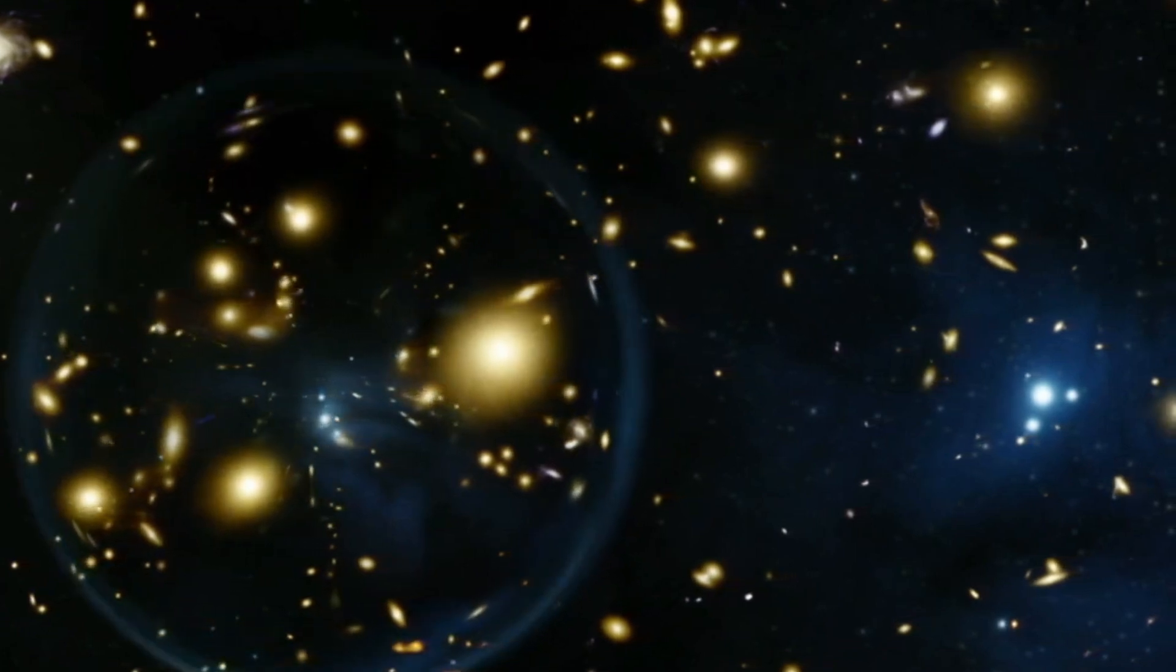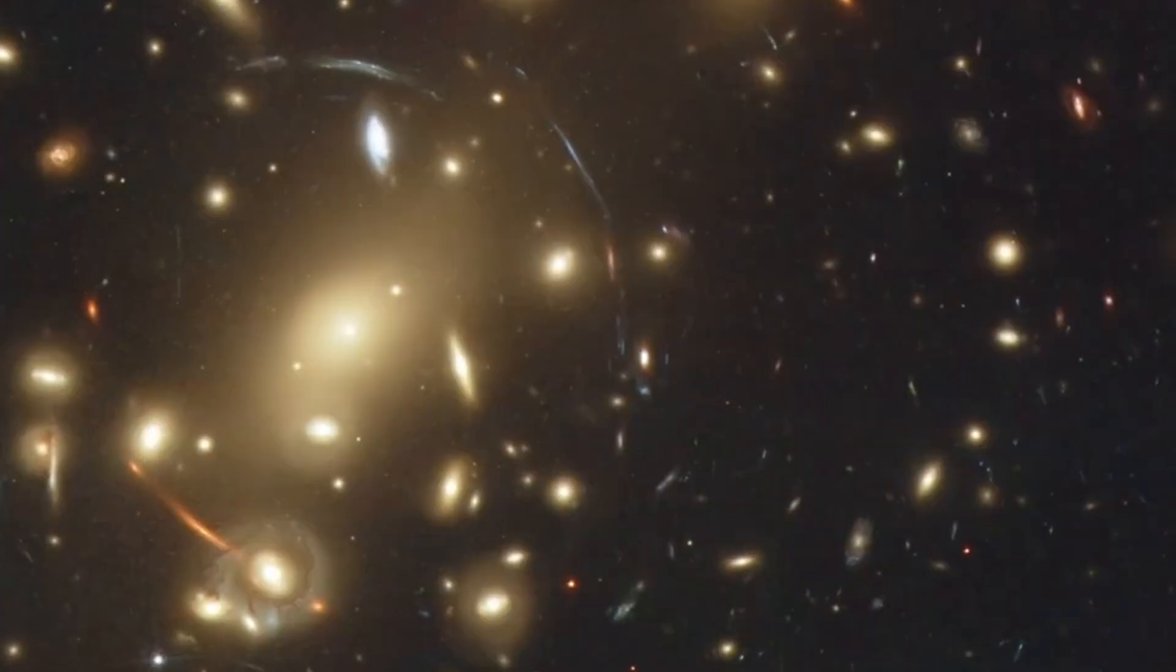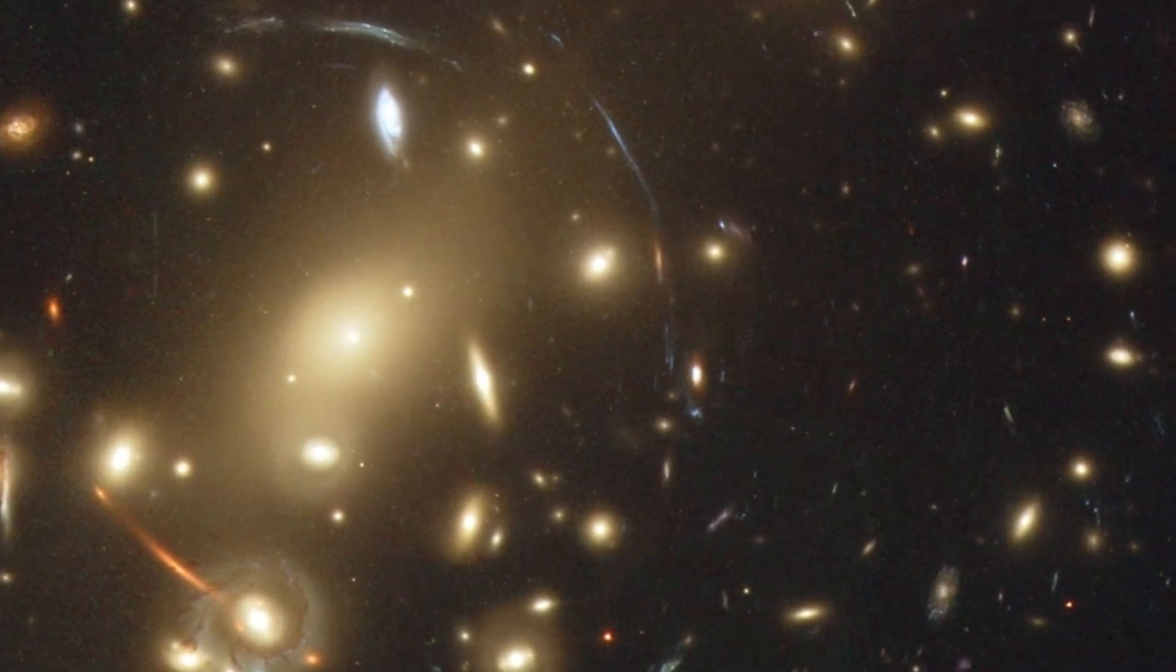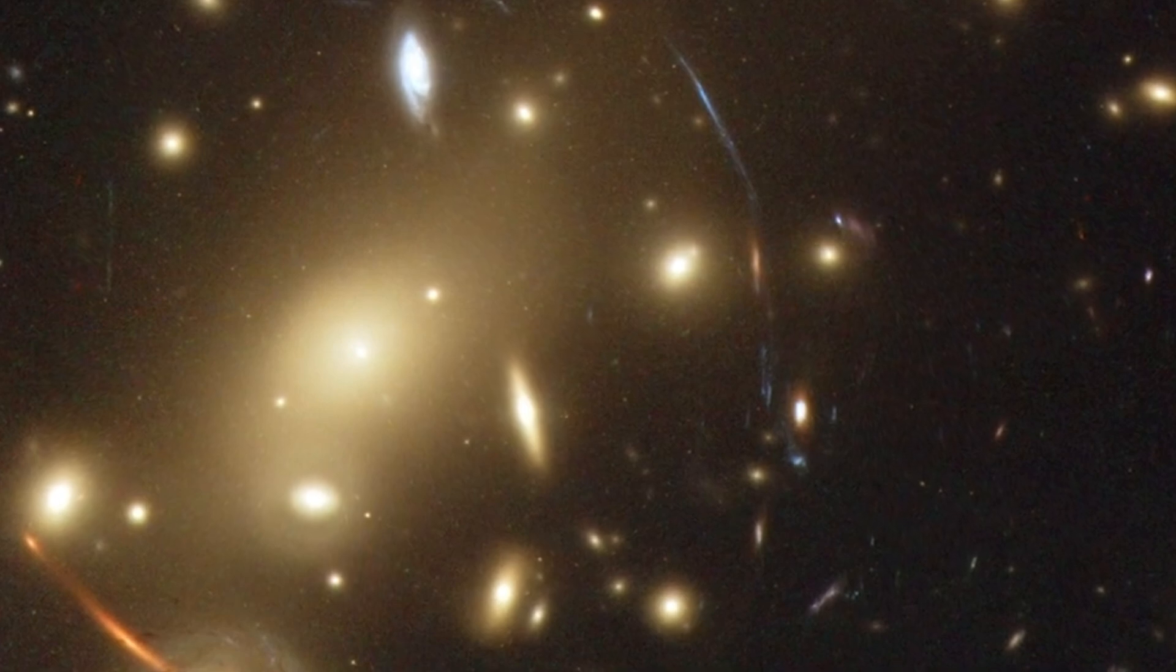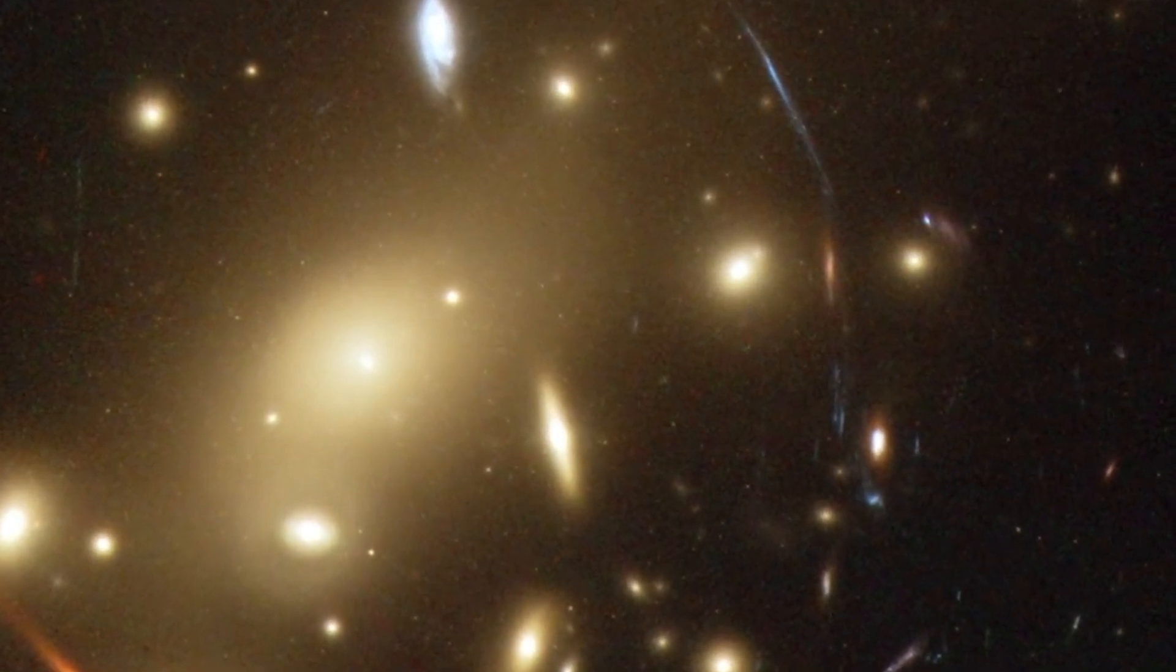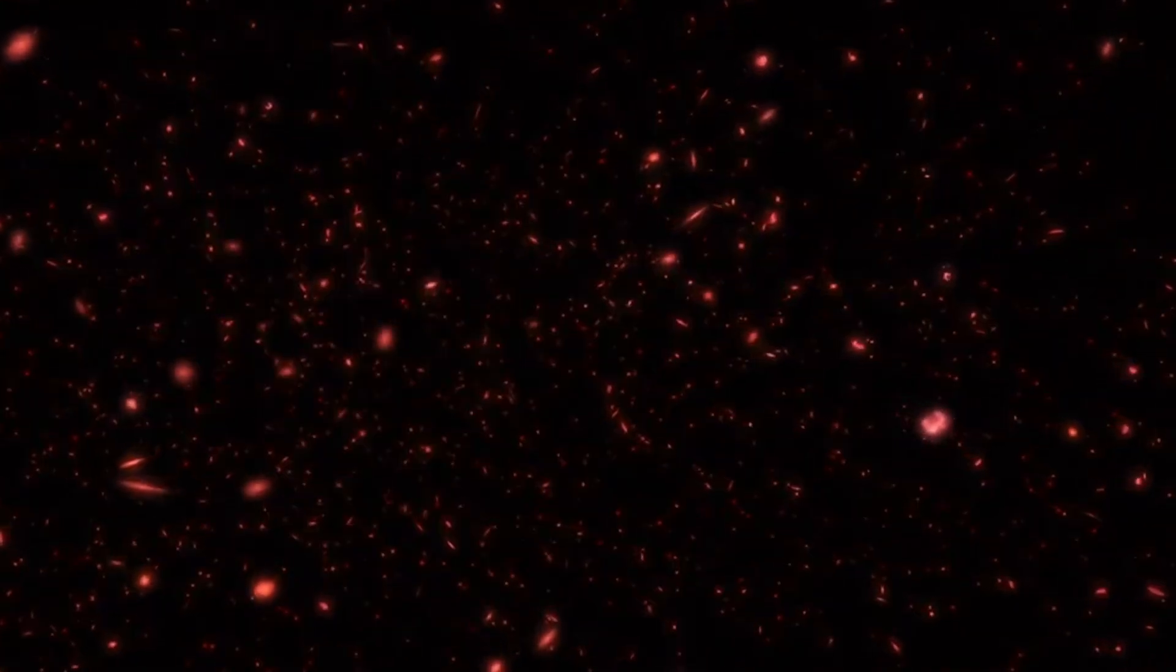The galactic cluster is what separates Earendel and us. In fact, it's so massive that it wraps the fabric of space itself, which produces a magnifying effect. Astronomers can now use the cluster as a magnifying glass by looking through it.